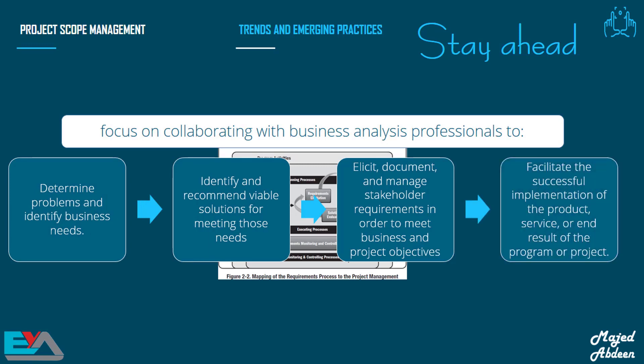The trends and emerging practices for project scope management focus on collaborating with business analysis professionals. We work together to determine problems and identify business needs, as well as identifying and recommending possible solutions for meeting those needs. We also elicit, document, and manage stakeholder requirements in order to meet business and project objectives. And we aim to facilitate the successful implementation of the product, service, end result, or the program or project. You might remember the business case document, which we create before the project starts — the business case contains all these domains. We discussed it at the end of Chapter 1.